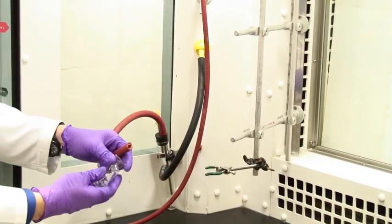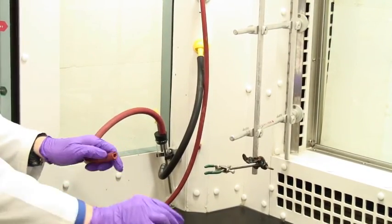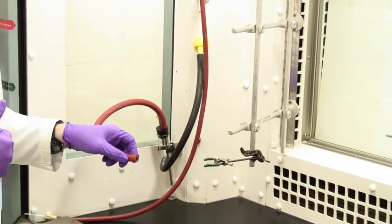Notice that the vacuum tubing and the Buchner itself have quite heavy walls. That's so they don't collapse under reduced pressure.